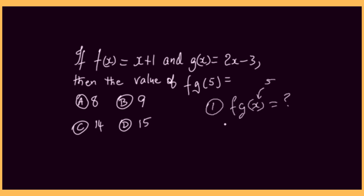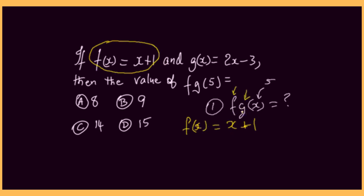The first function we're seeing is f. So we're going to write the f function, which has been given to us as f of x equals x plus 1. Then we're going to look at the second function and enter the g of x function into it. So where we have x, we're going to input the g function.